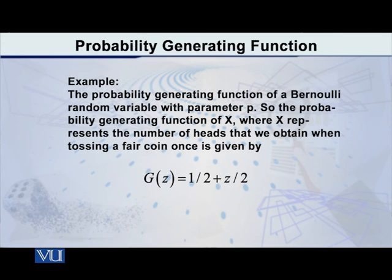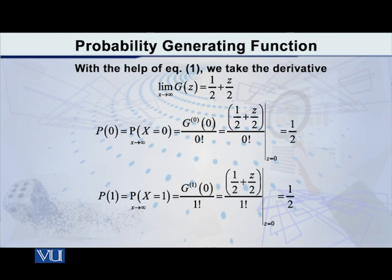Let me give you an example to explain this. Considering the probability generating function of a Bernoulli random variable — when we are tossing a fair coin only once — the PGF for this case is given by 1/2 plus z/2. I want to find the probability that X equals 0. According to the formula, I have to find the 0th derivative of the PGF, then put z equal to 0, and divide by 0 factorial.